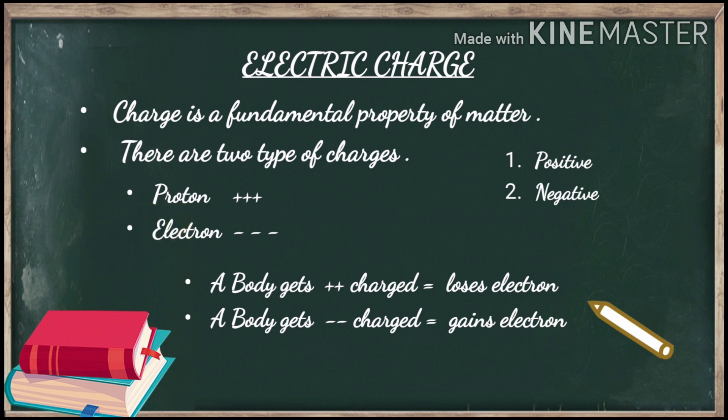Positive charge is due to protons and negative charge is due to electrons. If we have a body with no charge, that means it is a neutral body, which means protons and electrons — positive and negative charges — are equal in number in that body.